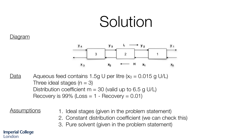It's always good to explicitly state our assumptions. Our assumptions are that the stages are ideal — this was given in the problem statement — that the distribution coefficient is constant over the range of concentrations we're working with. We should at the end of the problem do the mass balance over the whole system and check that the aqueous phase concentration doesn't exceed 6.5 grams of uranium per litre, which is the region over which the constant distribution coefficient is valid. We are also assuming a pure solvent, so stream y4 has a concentration of zero, which was given in the problem statement.